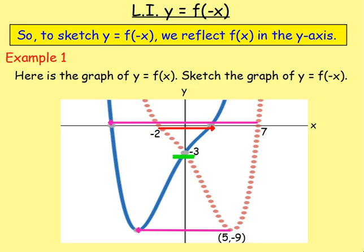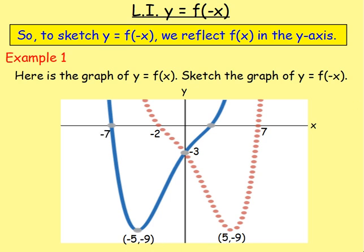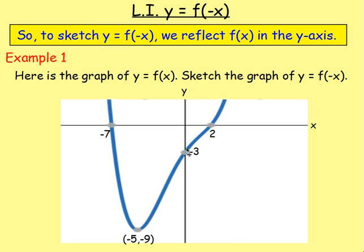The y-axis is a line of symmetry, so start thinking about the points. The point (5, -9): if you change the x from a positive to a negative, you'll have (-5, -9). Changing other points as well — x equals 7 will become negative 7, and x equals negative 2 will become positive 2. We're just changing the x value from negative to positive or positive to negative. The point (0, -3) will just stay as it is, because x equals 0. And that is what you will get.